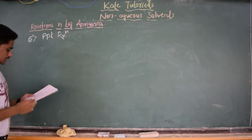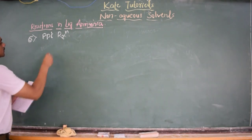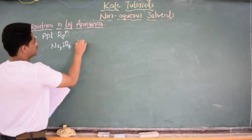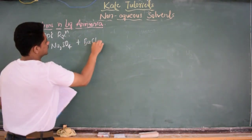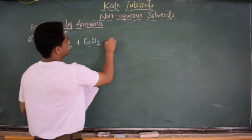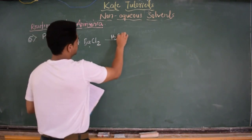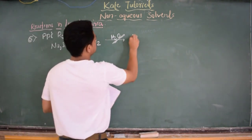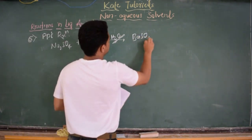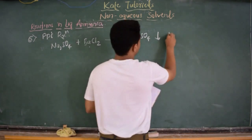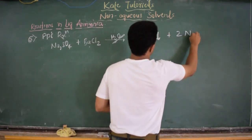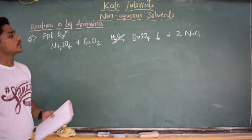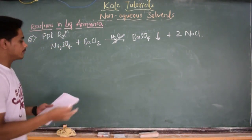Consider Na2SO4 plus barium chloride. In aqueous water medium, this forms BaSO4 precipitate plus 2 molecules of sodium chloride, NaCl. We know this reaction takes place in water medium and BaSO4 is the precipitate.